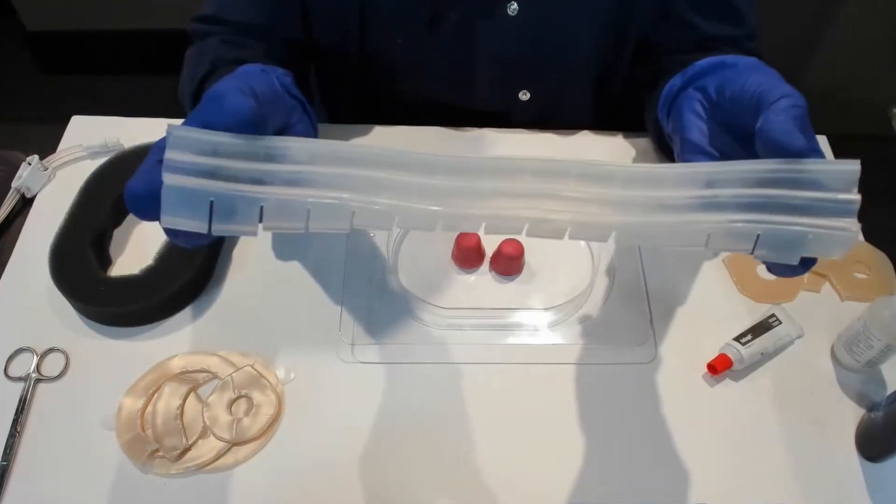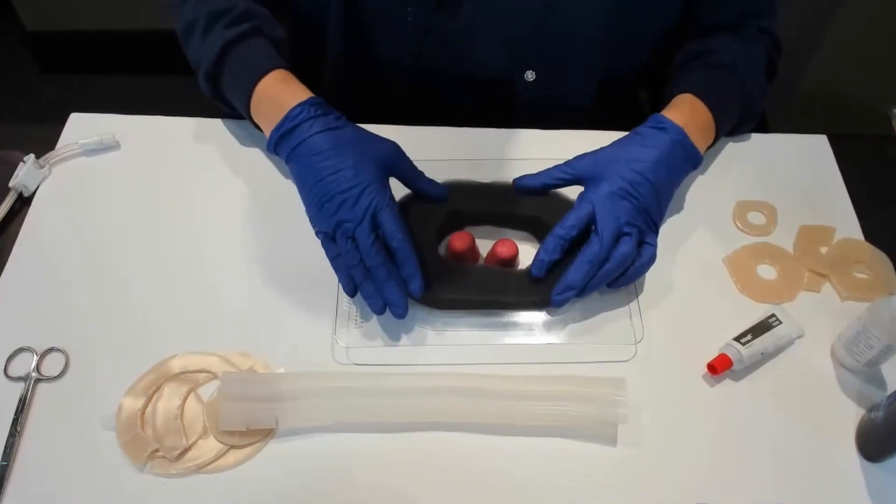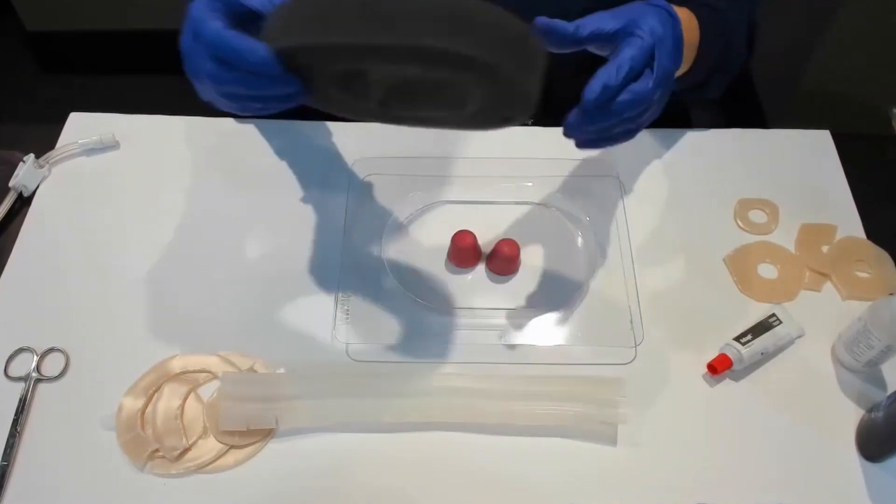I'm going to try and go through each step with you. You want to cut your foam so that it's around your fistulas. That's step one.